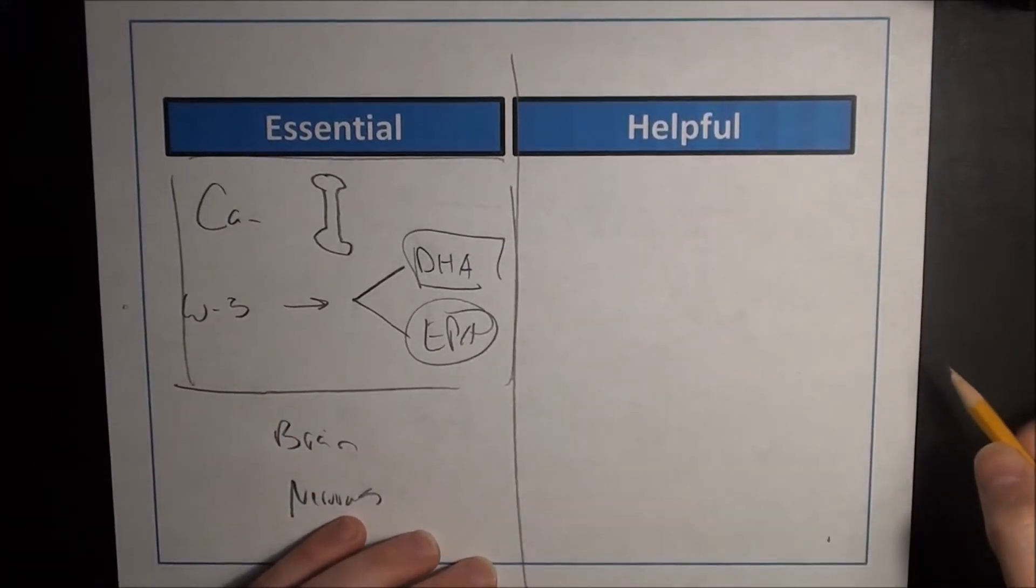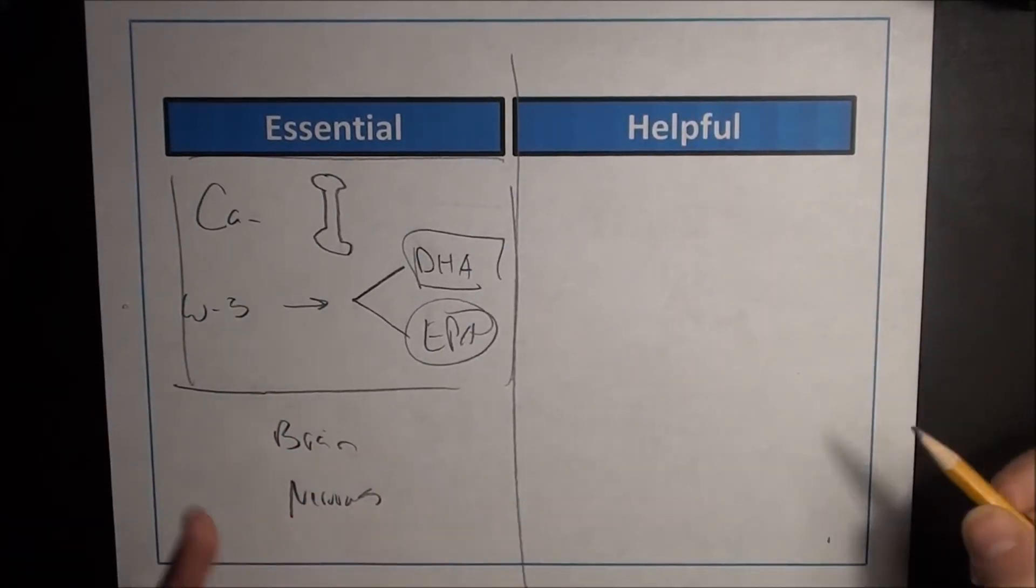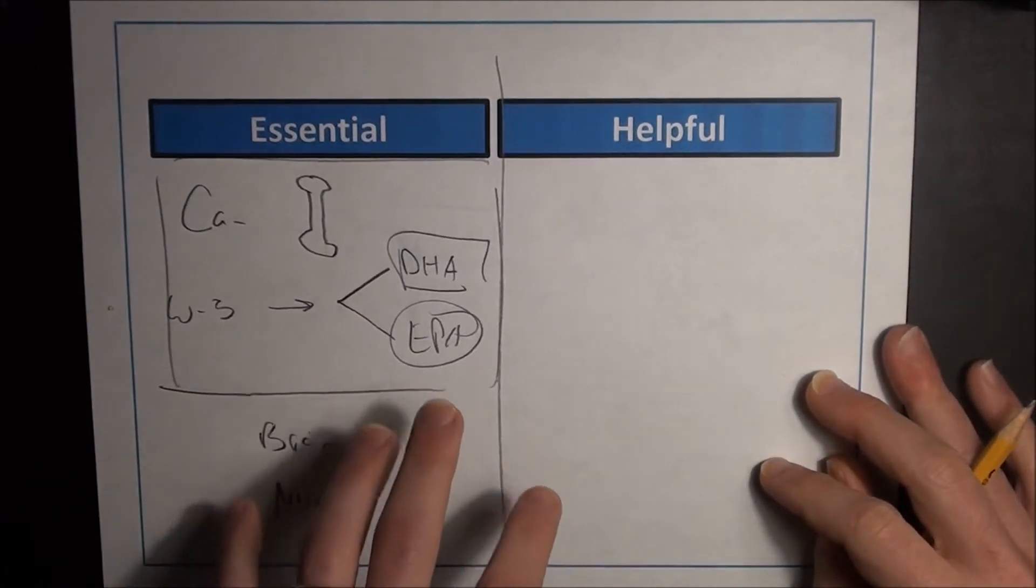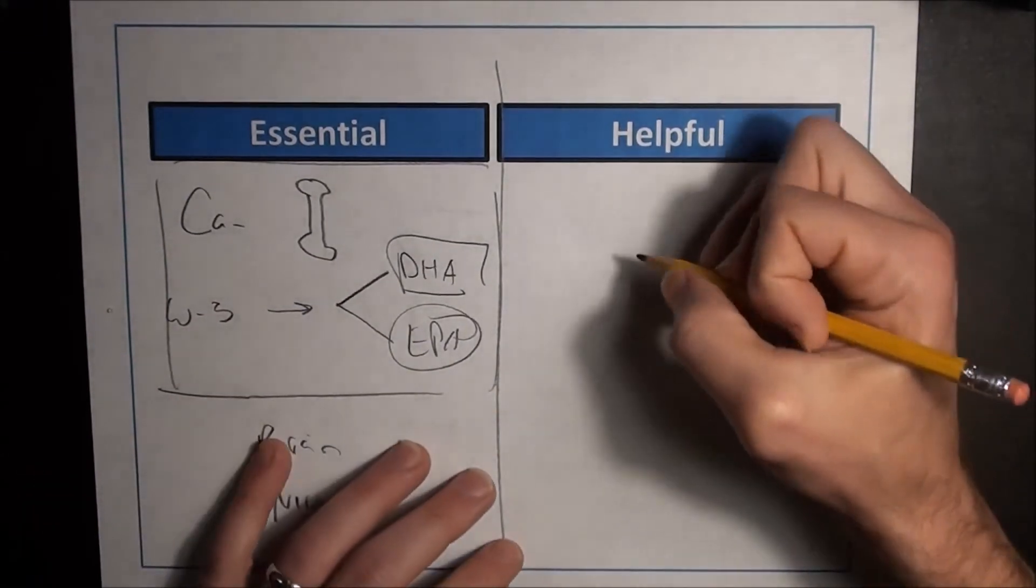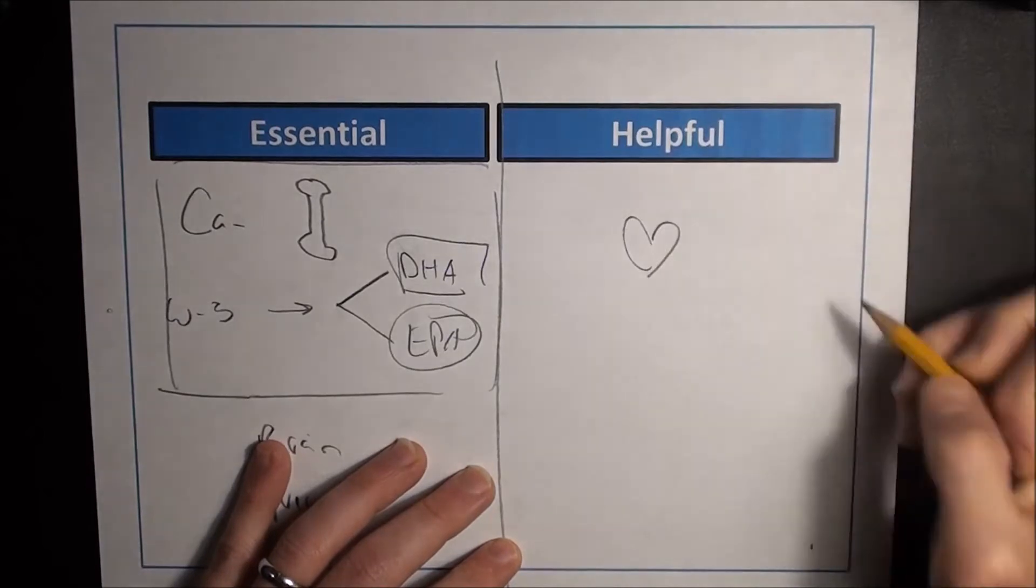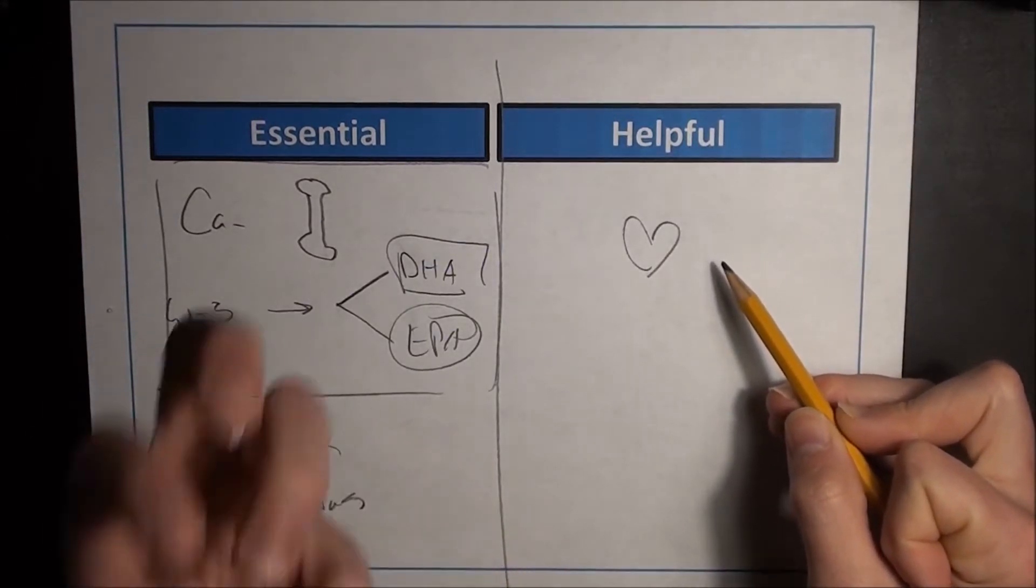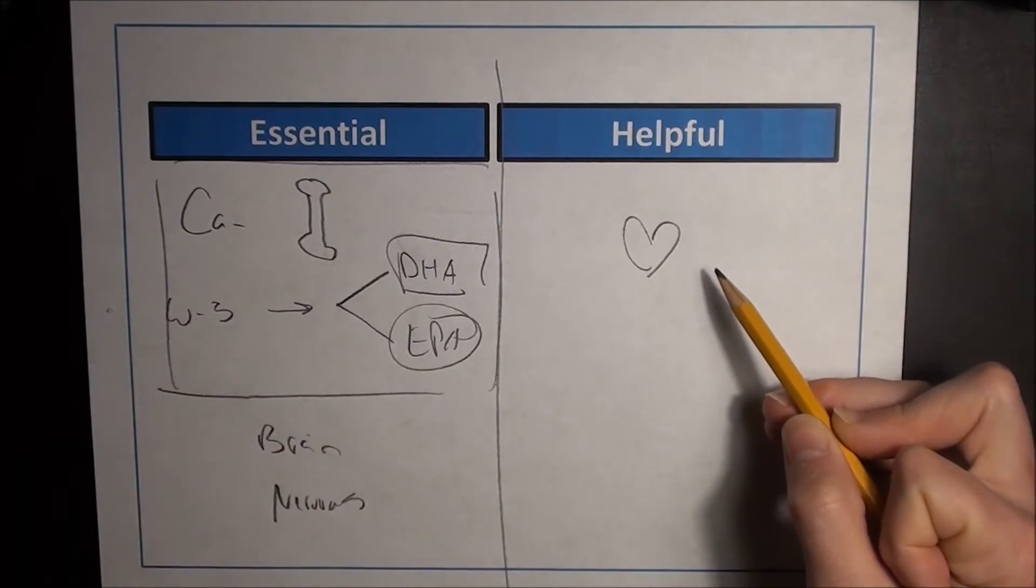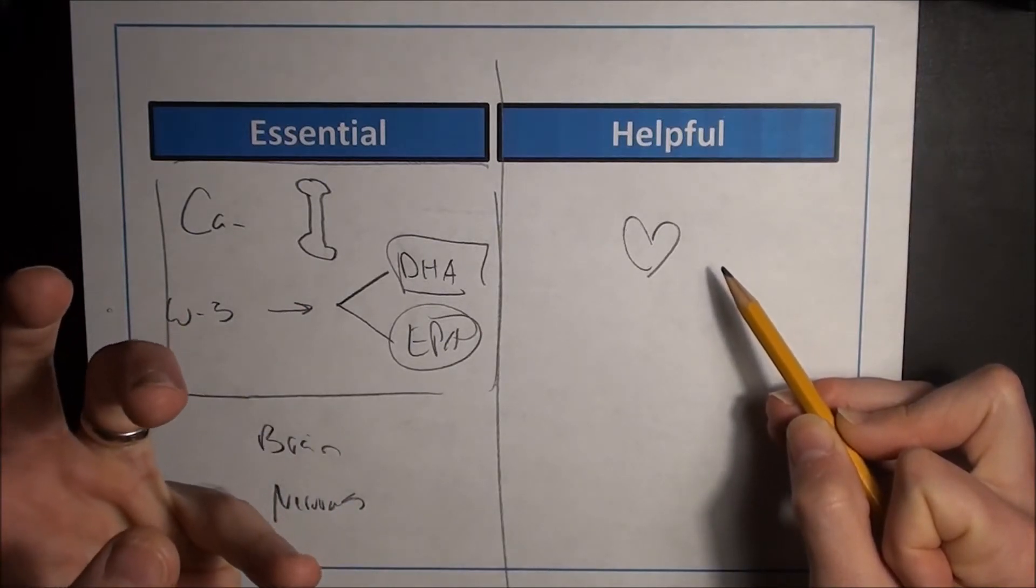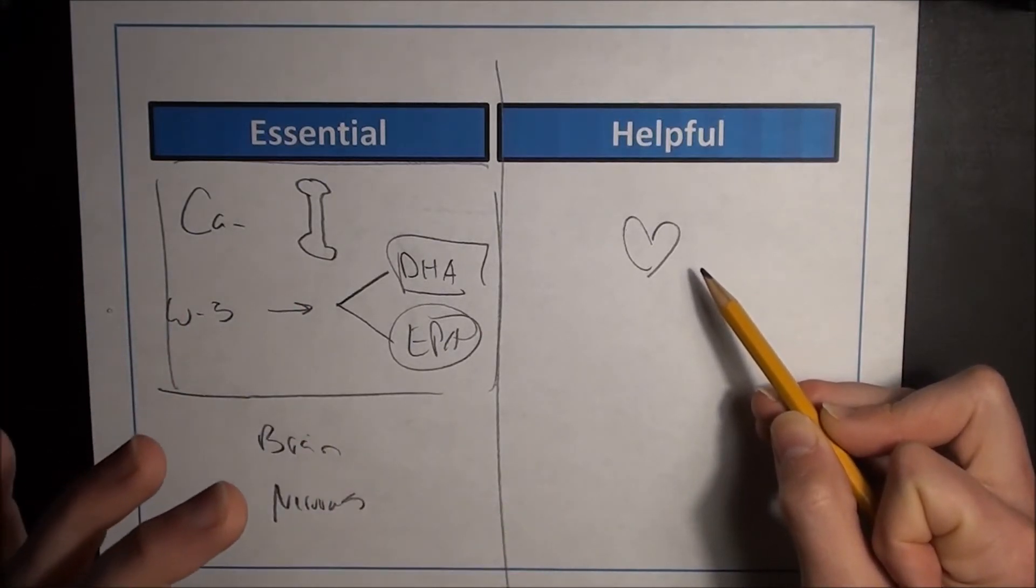There are other reasons why omega-3s are helpful, and these are the reasons you most recently associate with them. One is that omega-3s are particularly helpful at keeping triglycerides low—it's just a property of omega-3s that they can bind to these substances and keep them low throughout the body. The less triglycerides you have, the healthier your heart is going to be.